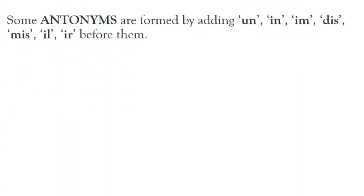Now we are going to study some more antonyms. But you have seen that in the previous charts, antonyms were different from the words. But here the antonyms are almost the same — we are just going to add un, in, im, dis, mis, ill, or ir at the start of the word to make its antonym. That means we are going to add a prefix. Pahle, koi aisa word lagayenge jisse ki word ka antonym ban jayega. Let's see through a chart; I have given plenty of them here.